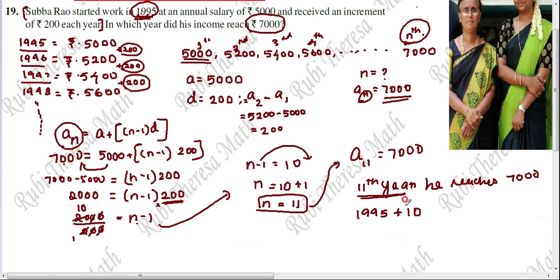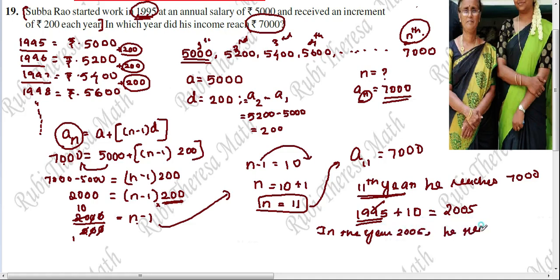So the 11th term equals Rs. 7000, meaning it is the 11th year when he reaches this salary. Since he started in 1995 as his first year, we add 10 more years: 1995 plus 10 equals 2005. Therefore, in the year 2005, he received an annual salary of Rs. 7000.